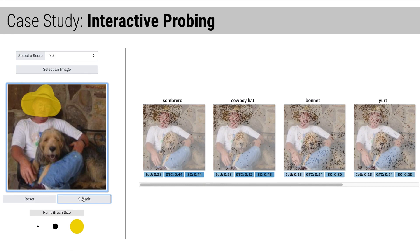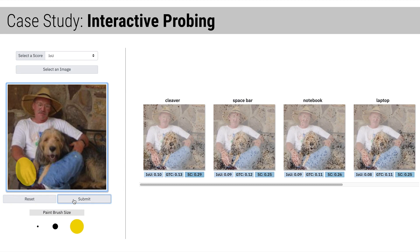Finally, we highlight the man's hand. Hand is not a label in the dataset, yet the returned classes are objects that would occur alongside a hand, like a notebook. It is promising that the model has learned correlations about unlabeled objects; however, this may warrant further analysis, because the model should not be dependent on the presence of a hand to classify a notebook. Overall, using Shared Interest in this style of what-if analysis, we are able to rapidly test hypotheses about what the model has learned and where it might fail.